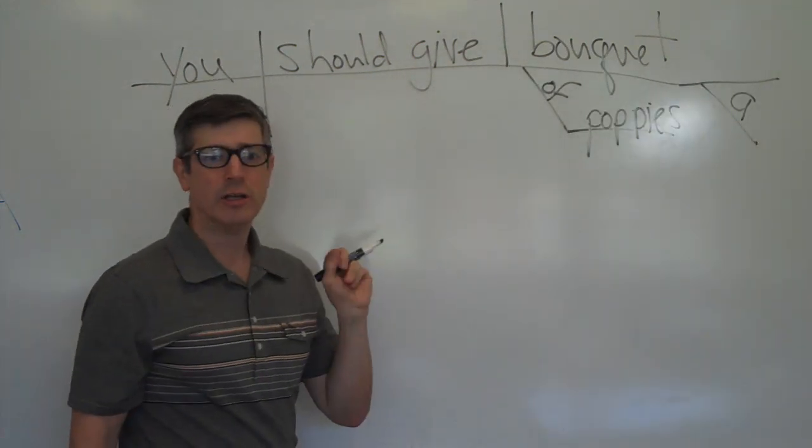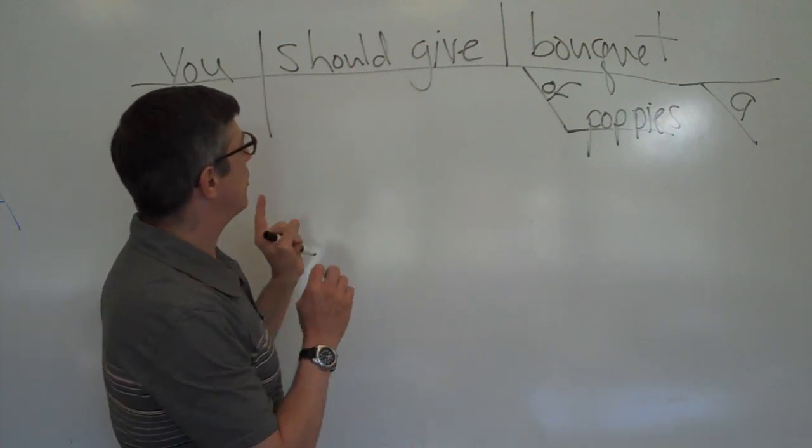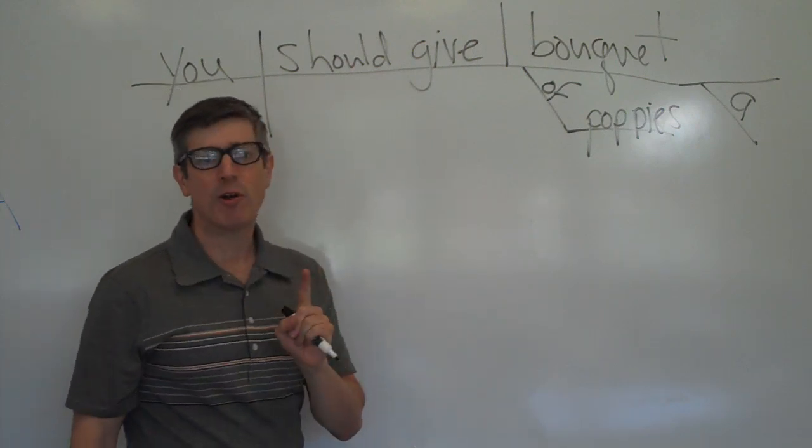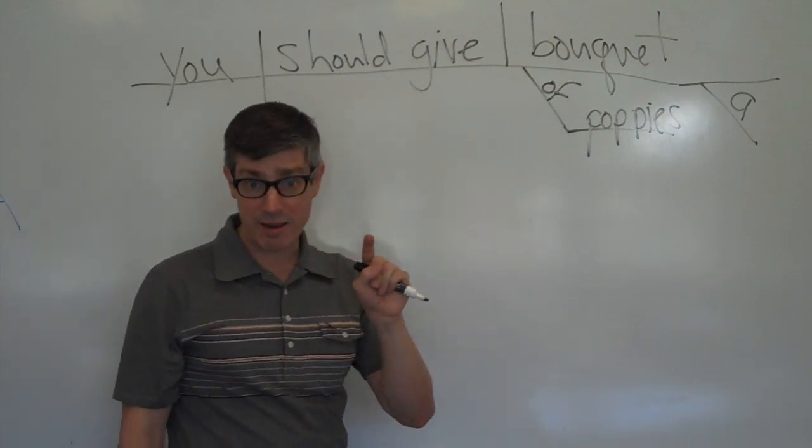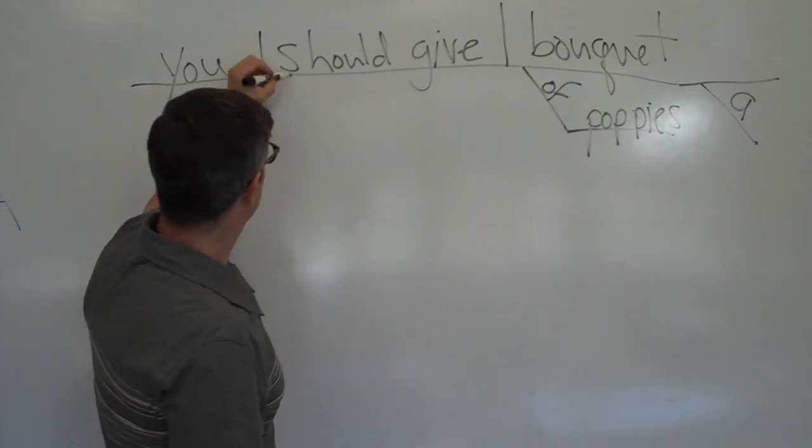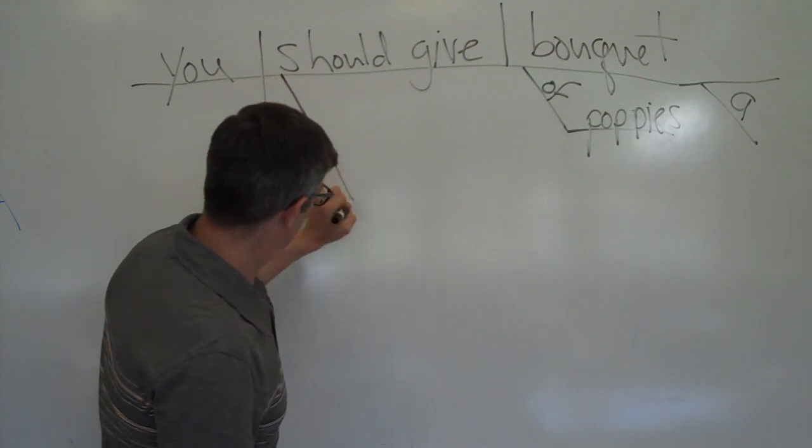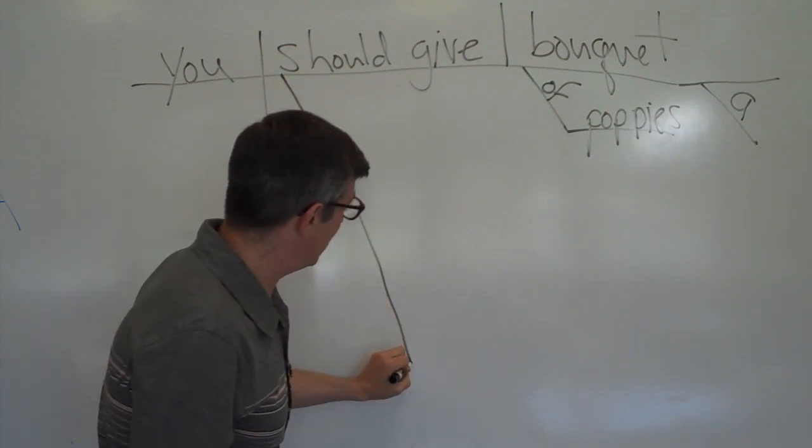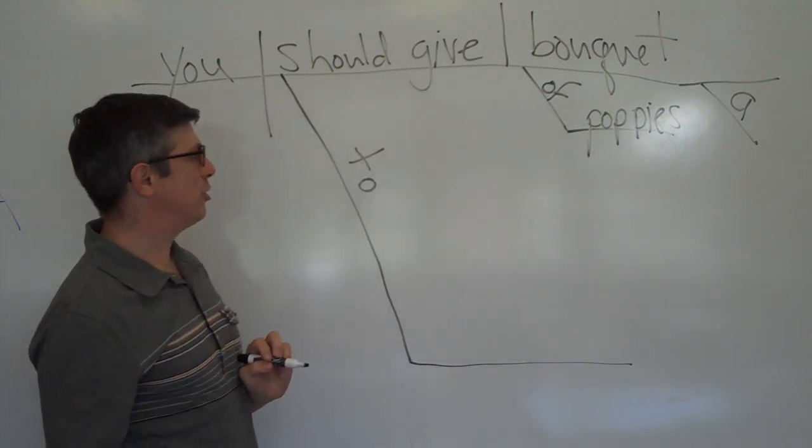Now we have our prepositional phrase. So if you give a bouquet of poppies to whomever I name next, that's our prepositional phrase. And now you're going to think I've gone nuts here, because I'm going to draw a big line down like that, just to put this little 'to' on. That's our preposition.